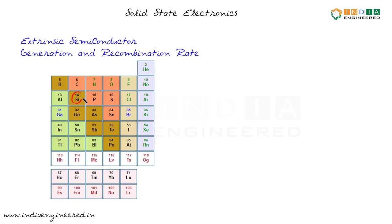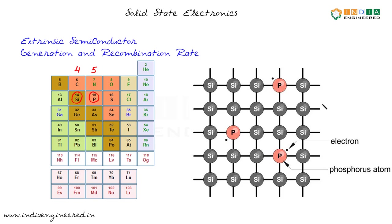Let's consider silicon as our semiconductor. The number of valence electrons in silicon is 4. Let's say a phosphorus atom forms our impurity. The number of valence electrons in phosphorus is 5. We add three phosphorus atoms to our silicon crystal. This is not a new compound — phosphorus atoms are simply occupying some of the sites in silicon. It is still silicon, but with phosphorus as the impurity.